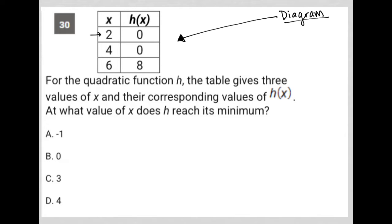We're told that when x equals 2, h of x is 0, which, just to make sure we're clear, this means h of 2 equals 0, right? h of 4 also equals 0, and h of 6 is equal to 8. That's what these values here mean.